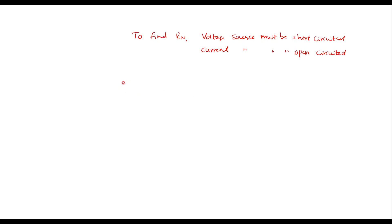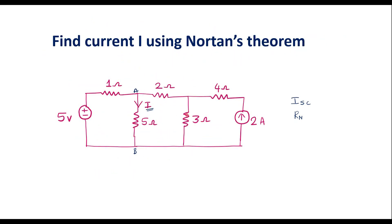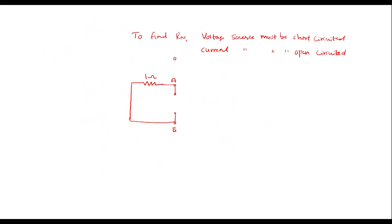So let me draw the equivalent circuit for Rn. The voltage source is short circuited. There is a 1 ohm resistor here and this is terminal A, and terminal B is here. I will remove the 5 ohm resistor so A and B become open. Then here we have a 2 ohm resistor. The 3 ohm resistor and 4 ohm resistor should be connected as they are, and we open the 2 amp current source. So here we have 2 ohm, 3 ohm, and 4 ohm. We have to find the equivalent resistance between A and B, that is Rn.